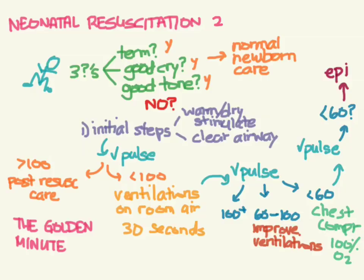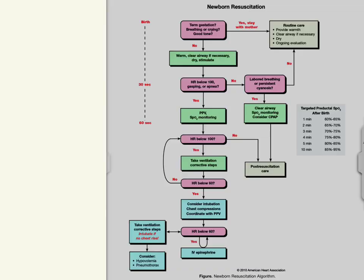Comparing to the supplied algorithm diagram: three questions at the top, normal care if okay, otherwise warm, dry, and stimulate. Less than 100 — start ventilations within the golden minute. Less than 60 — intubate and do chest compressions. Still less than 60 — epinephrine. Pulse oximetry targets: 60–65% at 1 minute, 80–85% at 5 minutes, 85–95% at 10 minutes.